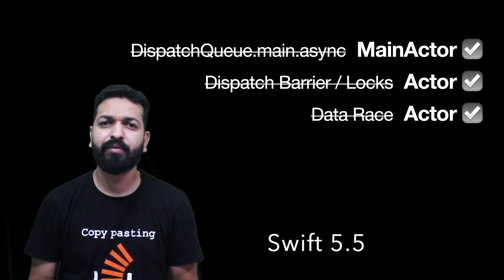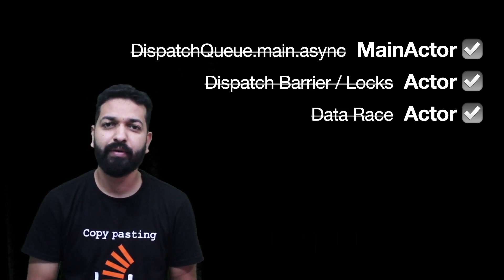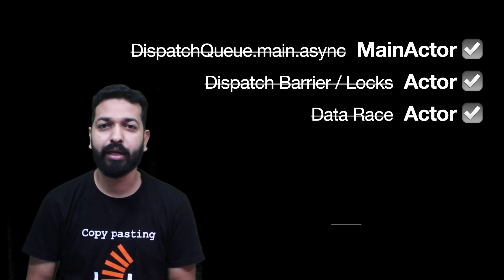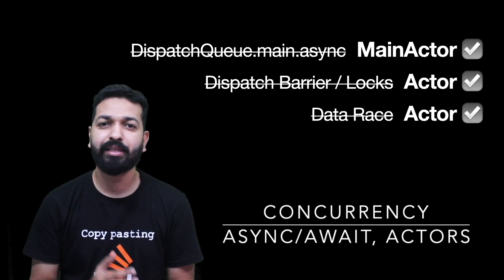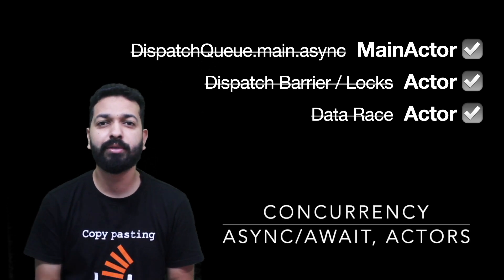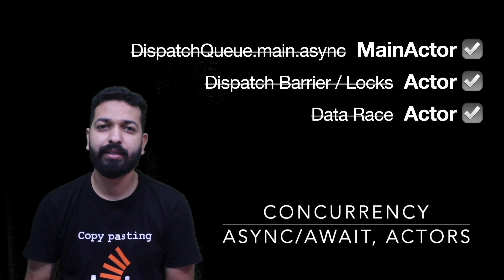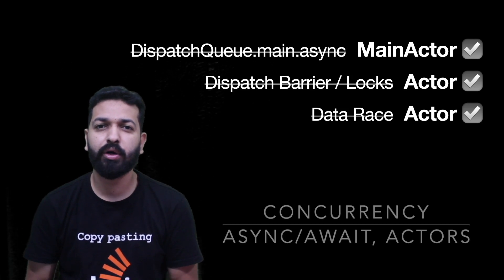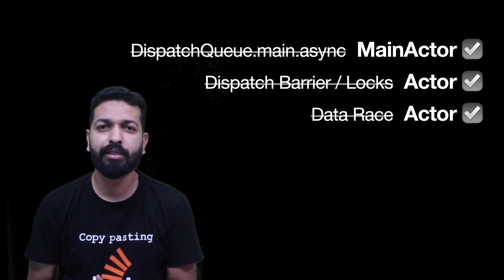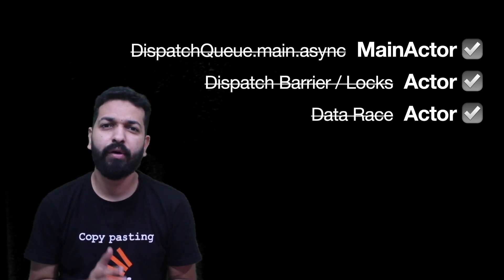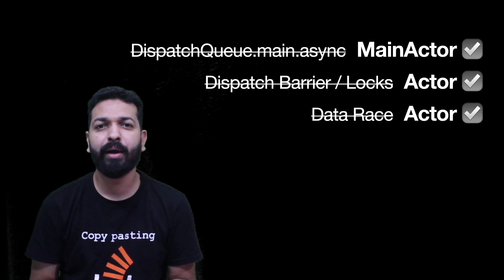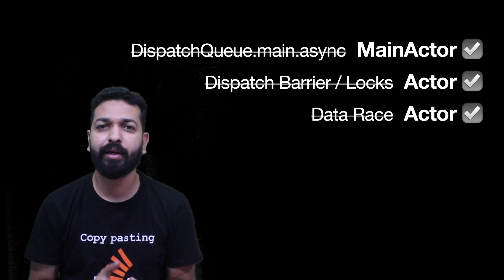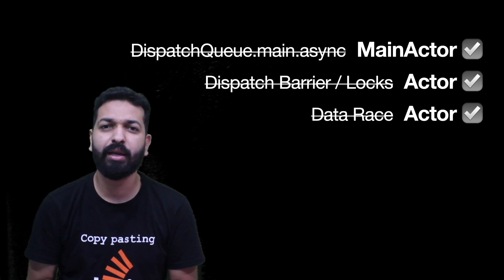Most of the changes that were introduced in Swift 5.5 were about concurrency, and I'm glad that Apple brought those APIs. Apple introduced those changes because dealing with threads, asynchronous calls, data races, race conditions — all these have always been a pain point for developers. And Swift made it really easy by introducing things like Async/Await, Actors, and many more.